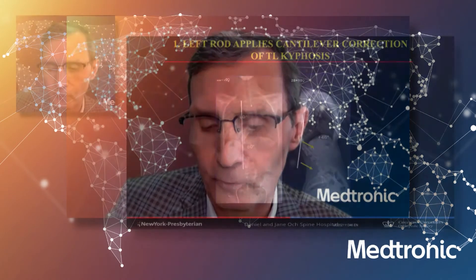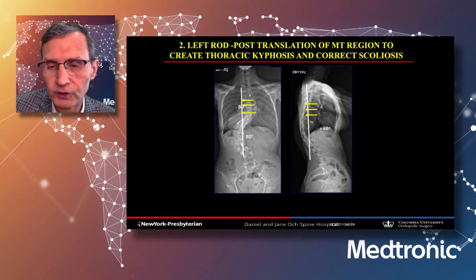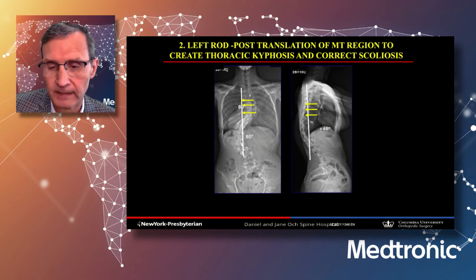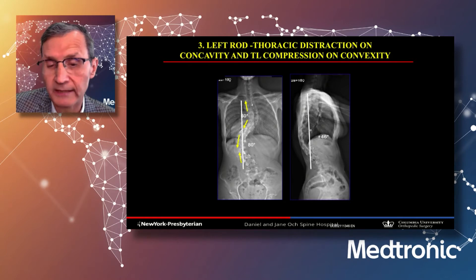My first rod application is on the left side — I grab the rod on top, then cantilever and push the rod down to correct the thoracolumbar kyphosis and improve the scoliosis. On that same rod, I use reduction screws in the main thoracic region to lift up and posteromedially translate the thoracic apex for scoliosis correction and production of thoracic kyphosis. I then do thoracic concave distraction and thoracolumbar convex compression to correct the sagittal plane into thoracic kyphosis while removing kyphosis at the thoracolumbar junction.